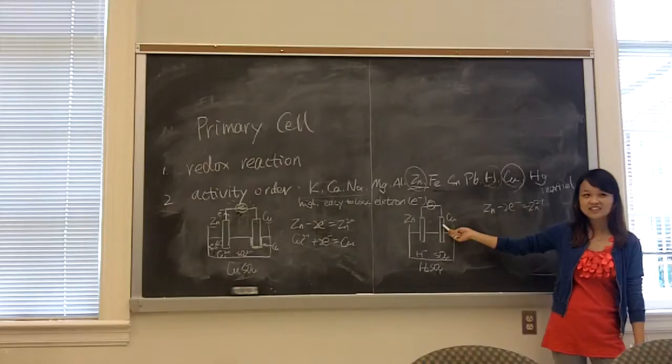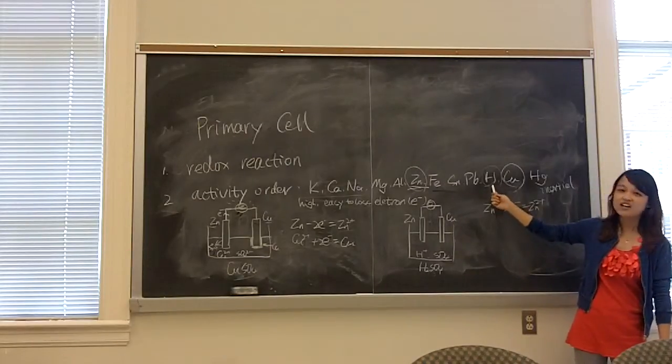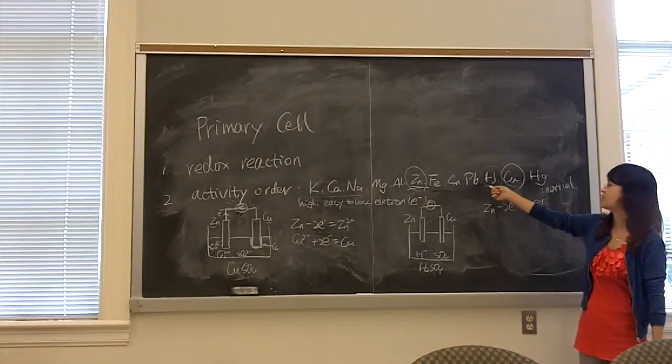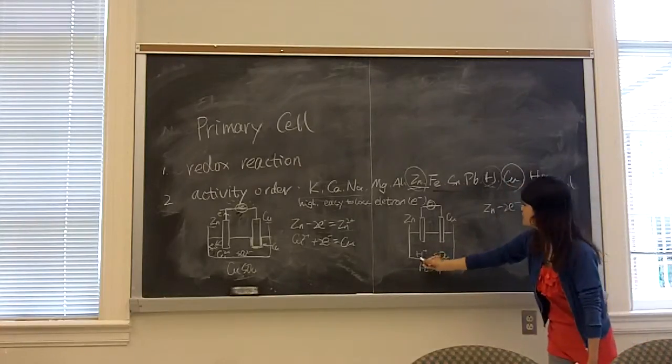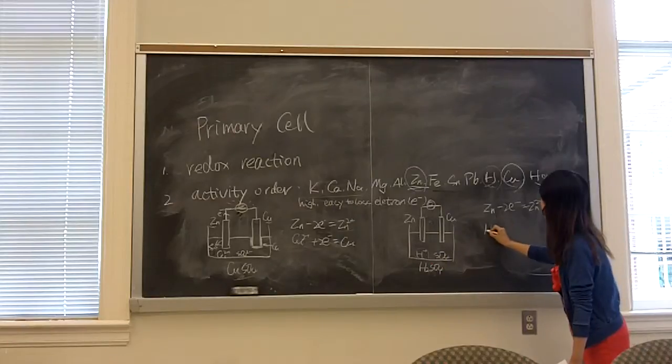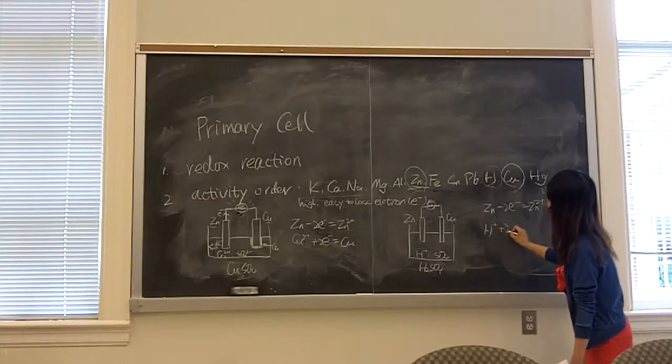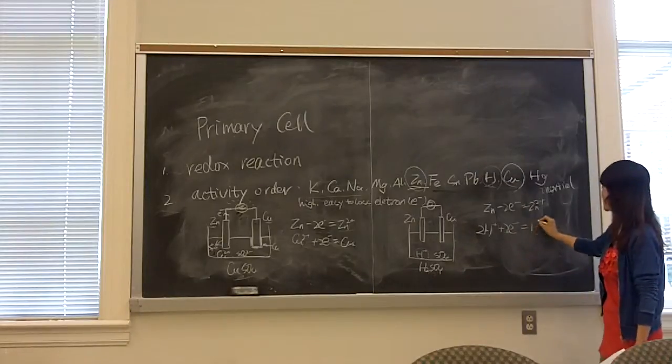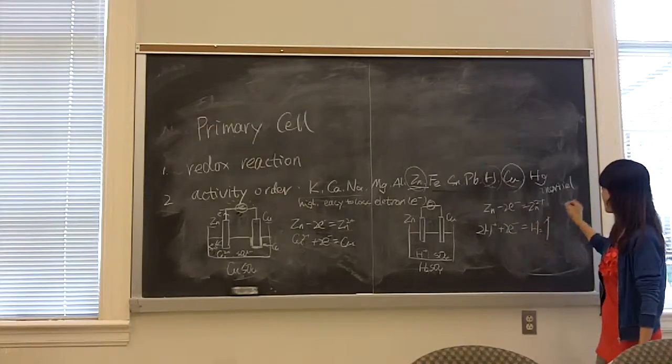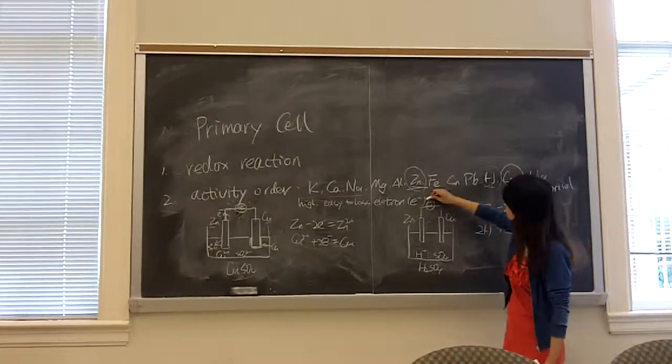Hydrogen is before copper. Hydrogen. Yeah. Hydrogen is more active than copper. So hydrogen here is going to accept to become hydrogen. And the light will still go on.